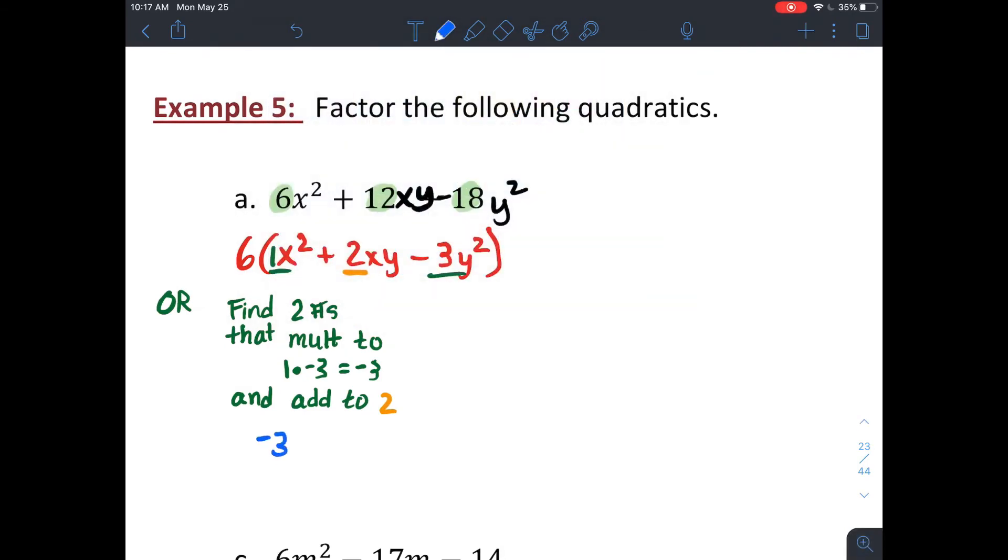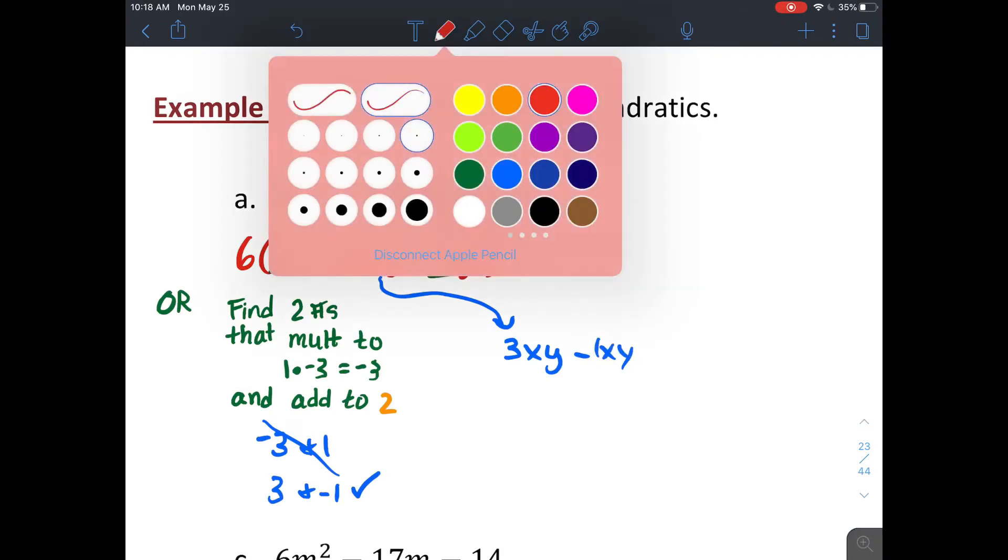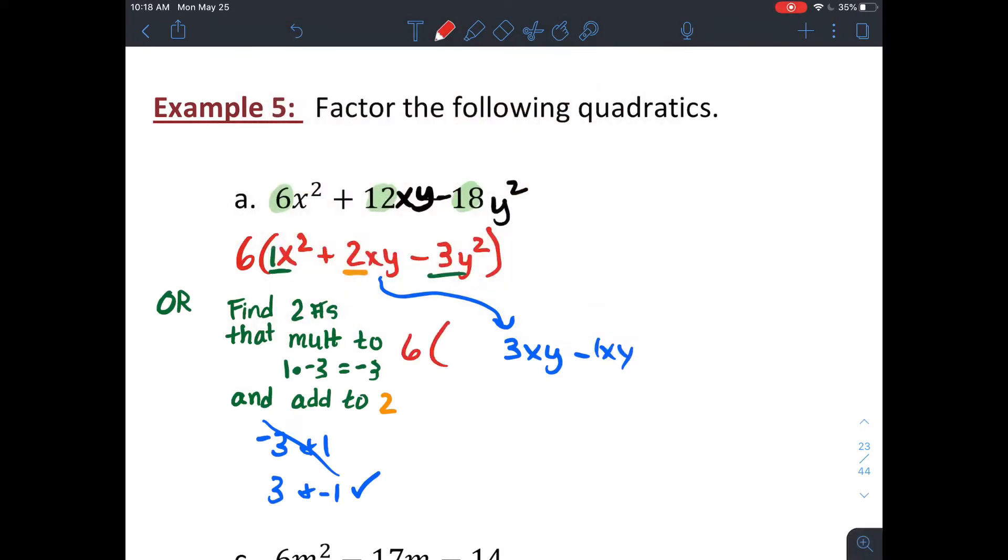So if you think about values that multiply to negative 3 and add up to 2, negative 3 and 1 gets you negative 2, but positive 3 and negative 1 will work. So I'm going to rewrite my middle term as a 3xy minus a 1xy using those coefficients I found, leaving the rest of it alone. And then I'm going to factor those four terms using grouping.